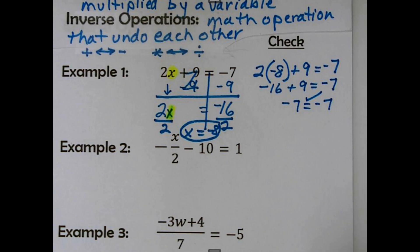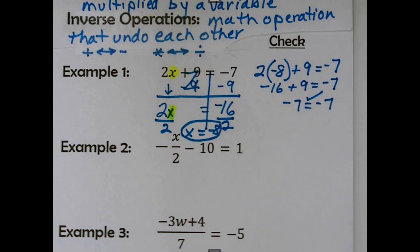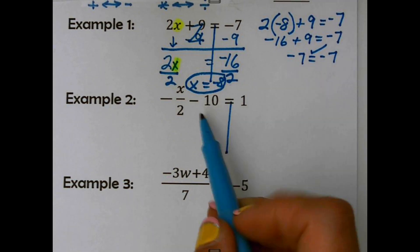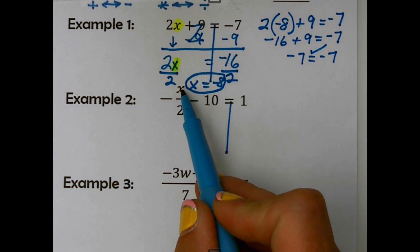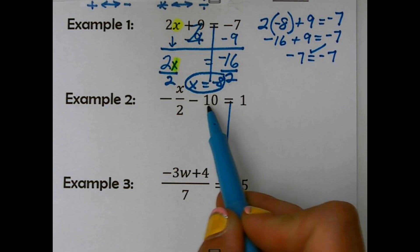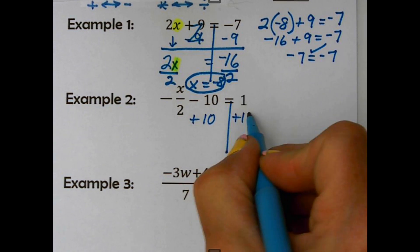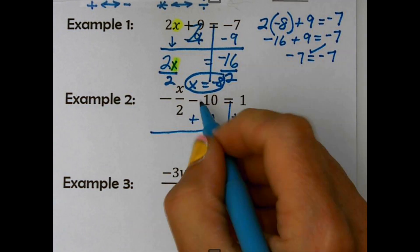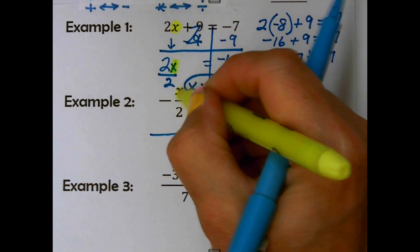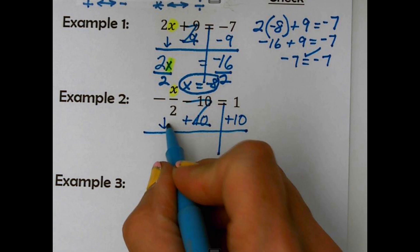Number 2. Draw your vertical line. You can probably see that we have this negative x divided by 2 minus 10. So we're going to undo, subtract 10. We're going to add 10 to both sides. I'm going to zap it out. Let me highlight the x there. I think that does help some of you. So I just bring this straight down. Negative x over 2 equals 1 plus 10 is 11.